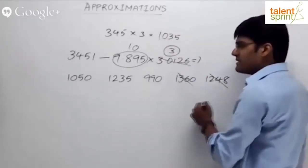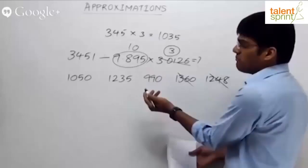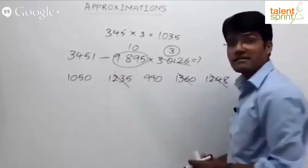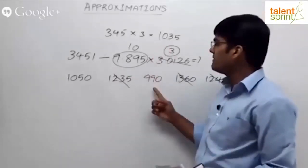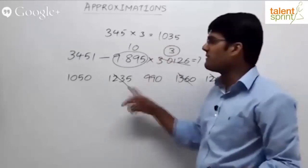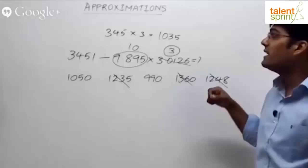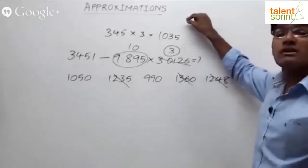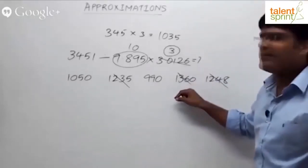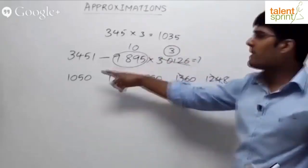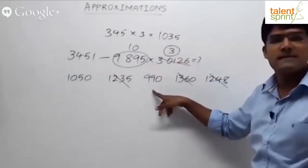1248 cannot be the answer. 1360 cannot be the answer. 990, maybe. 1235 cannot be the answer. So if you look at it, 1035 and 990 is close, a difference of 45. Now you have to really understand, will the answer be more than 1035 or less than 1035? If it is more than 1035, that is the answer. If it is less than 1035, then 990 will be the answer.